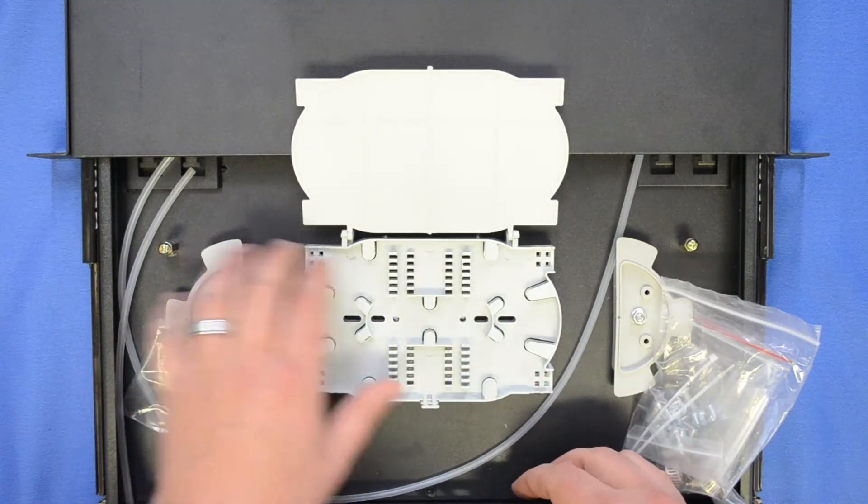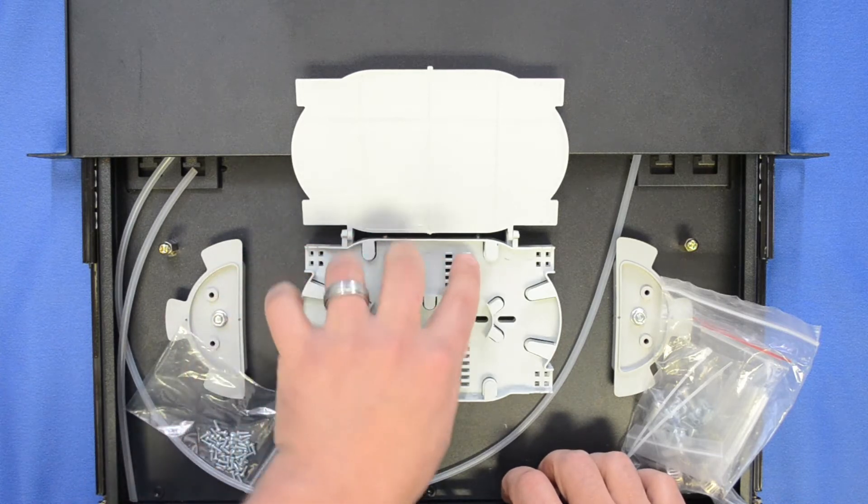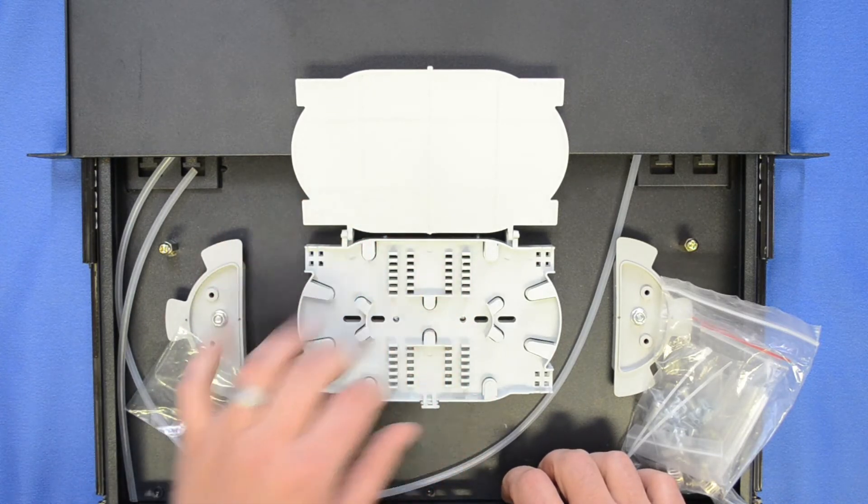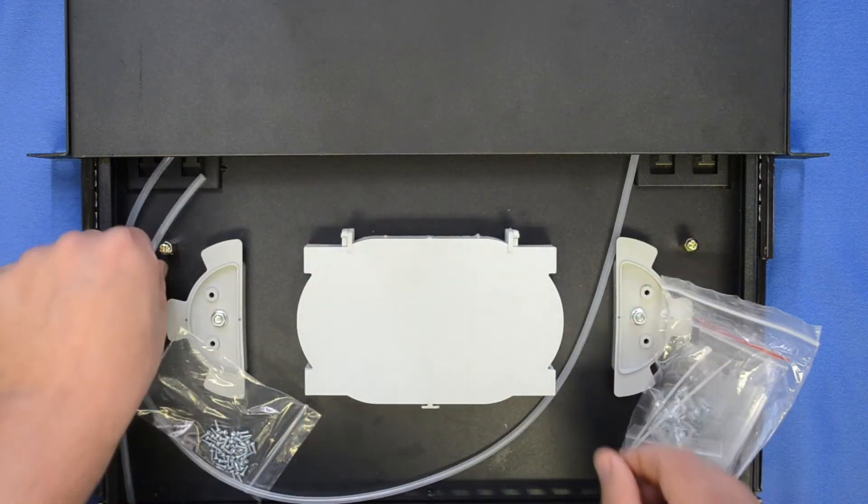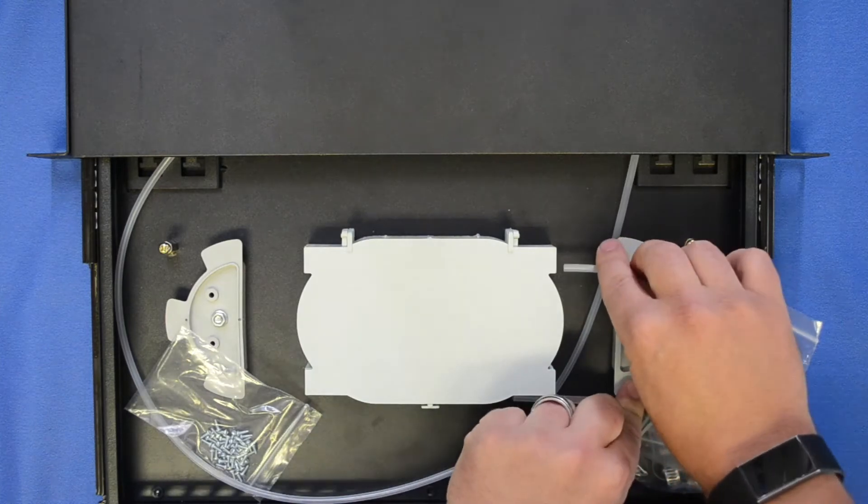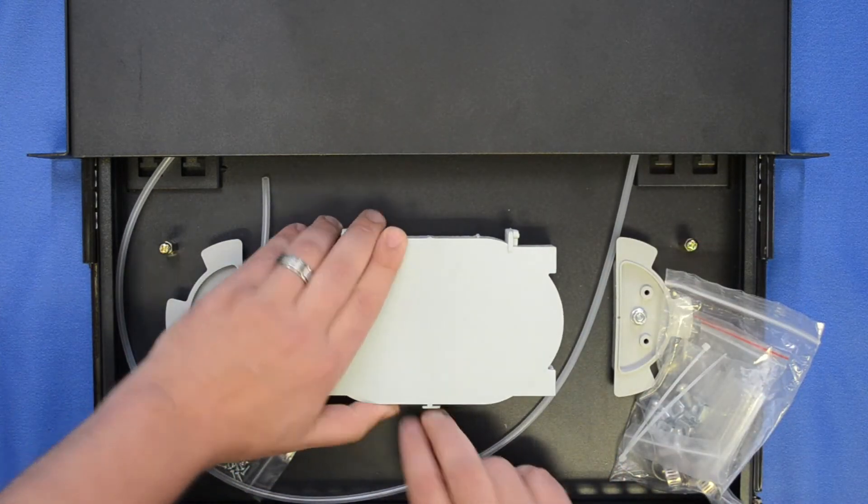Now if you are working with a 24 core it does take double stack so you can stack them on top of each other here and it will protect that splice. It works perfectly and you can link the two trays together like so just depending on how many cores the cable has itself.